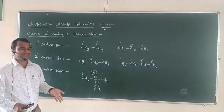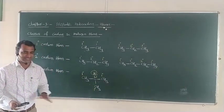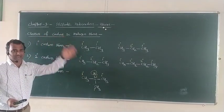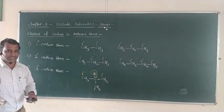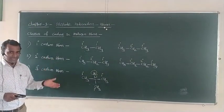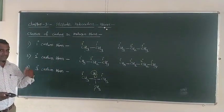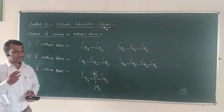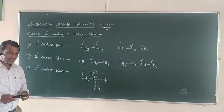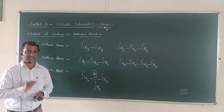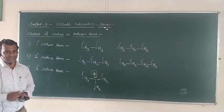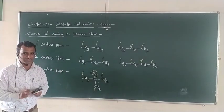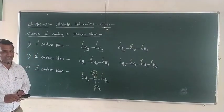In today's video lecture, we simply studied the classes of carbons and hydrogen atoms. To conclude: carbons and hydrogens can both be classified into three types — primary, secondary, and tertiary. Carbon and hydrogen classification depends on how many other carbons the given carbon is bonded to. With this, we conclude this lecture. Thank you.